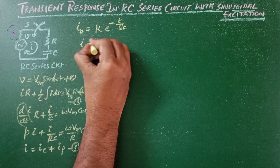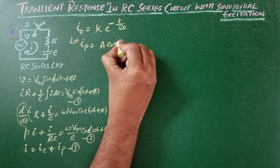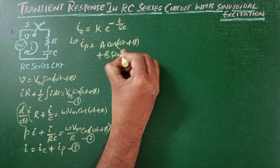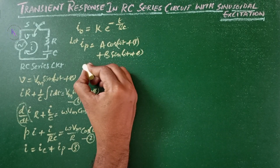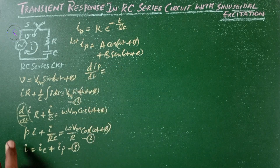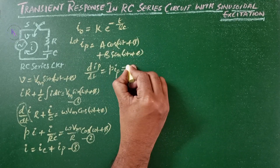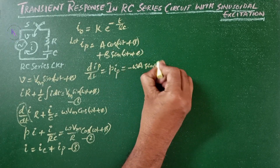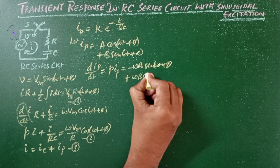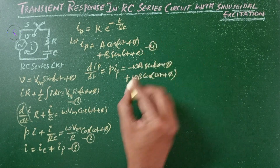Now let us find the particular function IP. Let IP equals A·cos(ωt + φ) plus B·sin(ωt + φ). Differentiating both sides gives d/dt of IP equals minus ω·A·sin(ωt + φ) plus ω·B·cos(ωt + φ). Let these be equations 4 and 5.